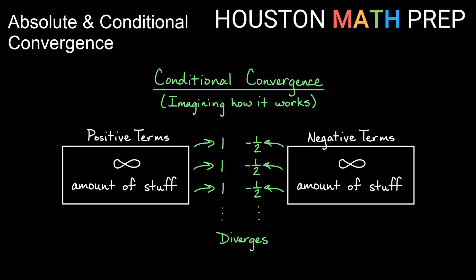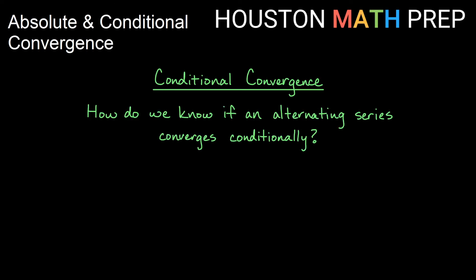The big question is: how do we know if an alternating series converges conditionally? The answer is we use the alternating series test to determine conditional convergence. The alternating series test is our next video in the series. Thanks for watching everyone — we'll see you in the next one.